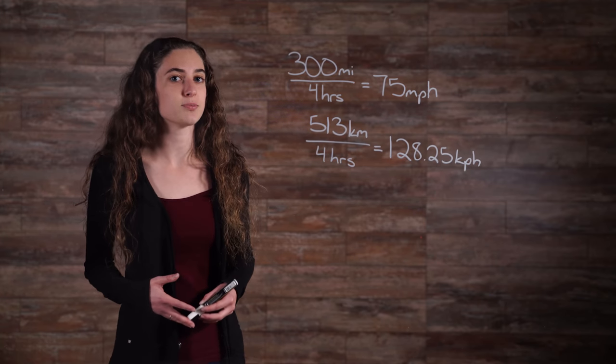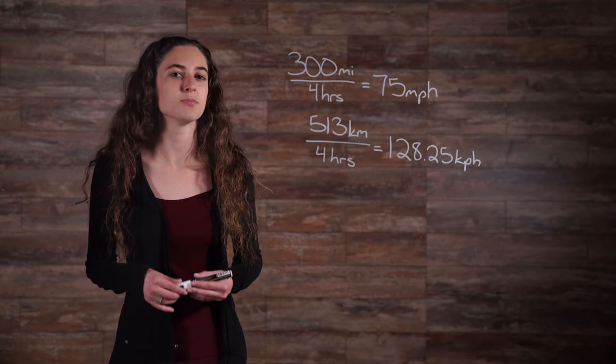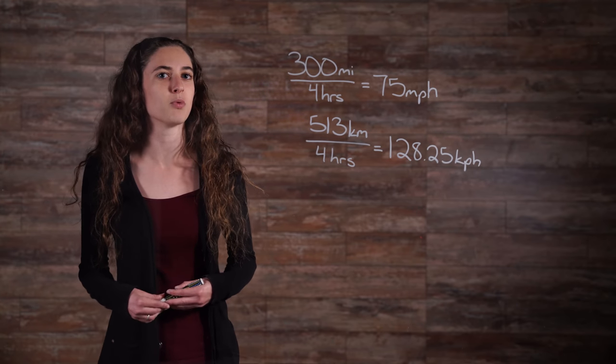To convert your average speed of 75 miles per hour to kilometers, simply multiply 75 by 1.609.